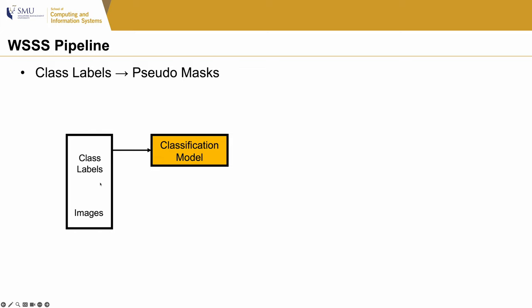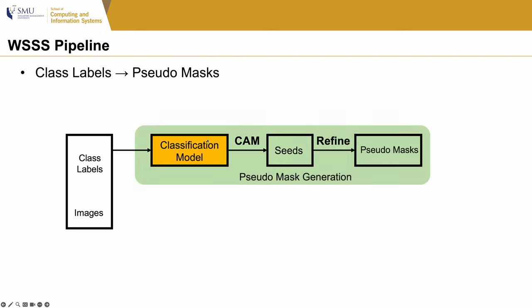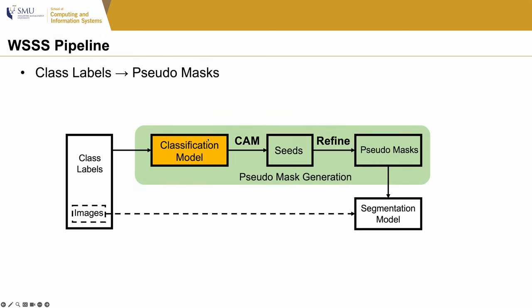This is the popular pipeline. First, we use class labels and images to train a classification model. Then, we use CAM to get seed masks of objects and refine them to get pseudo-masks. Finally, we take images and pseudo-masks to train the fully supervised model. Our problem is that the CAM generated by the classification model may be of low quality.